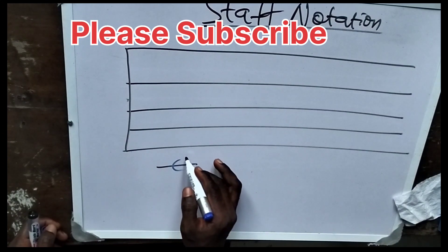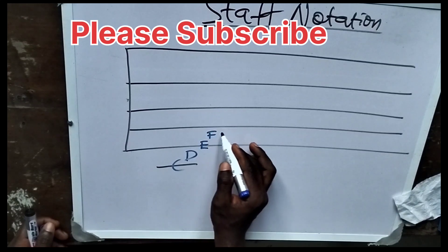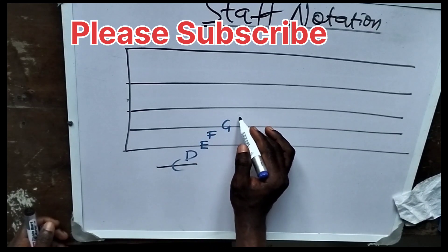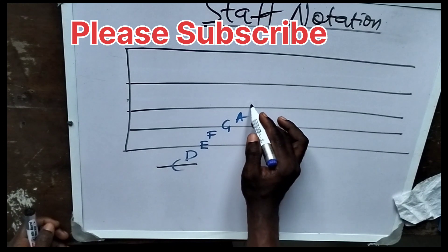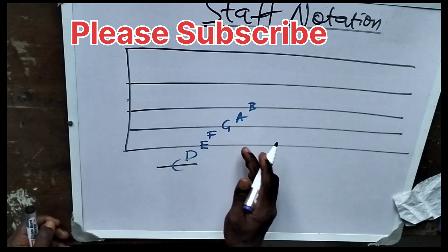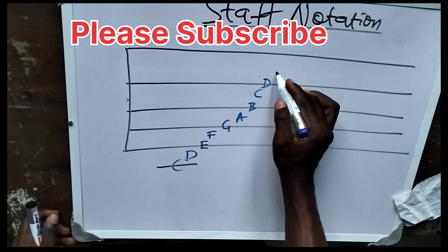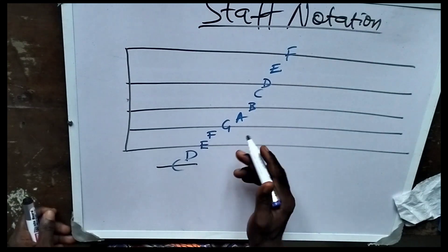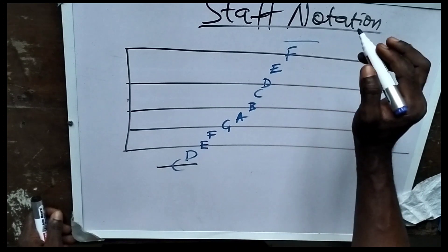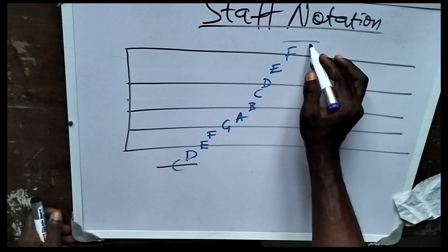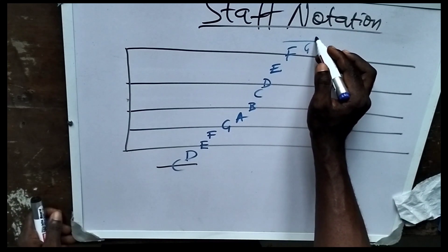So if this is C, this is D, this is E, the space is F, the line is G. And this one is A, here is B. And once you stop at C again, you continue B, C, D, E, F. If you want to keep on writing, you start adding ledger lines and keep on writing. Space, so G, A again.